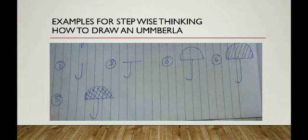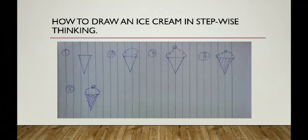I will show another example. See here — how to draw an ice cream in stepwise thinking. First step: I have one cone — that is my first step. Second step: inside the cone I am drawing the ice cream — that is my second step. Then I am drawing a circle. If I put cherries on top of the ice cream it will look nice, so at the top I am drawing one circle. That is my third step.